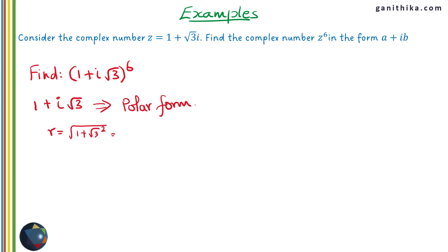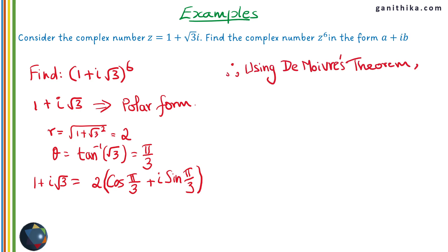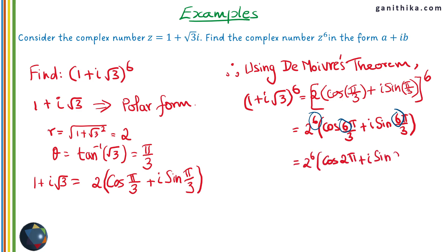The modulus is 2 and the argument is π/3. Converting to polar form: 2(cos(π/3) + i sin(π/3)). Now applying the theorem to raise this to the power of 6: the power of 6 goes to the modulus directly as 2⁶, and multiplies the argument as 6 × (π/3) = 2π. Substituting: cos(2π) = 1 and sin(2π) = 0, so the result is 2⁶, which is a purely real number.